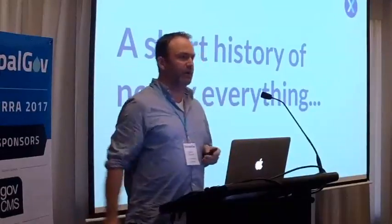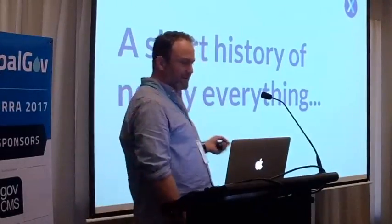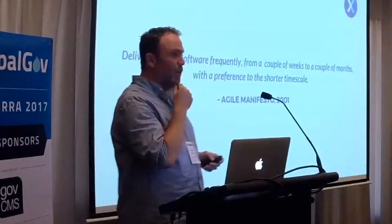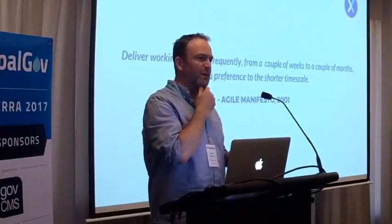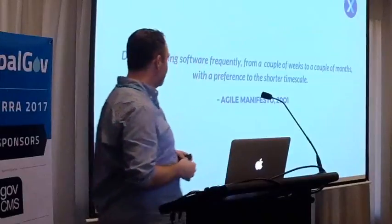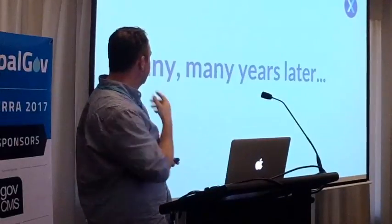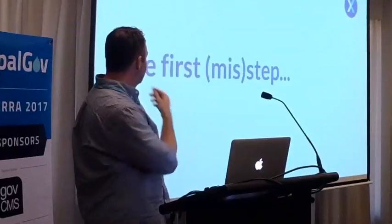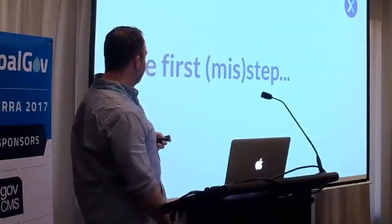I'm going to start with a short history of where we are and what's happened so far. Back in 2001, a few people got together and put something together called the Agile Manifesto, which I'm sure many of you are familiar with. This statement from the principles outlines very nicely what continuous delivery is all about. Many years later, in 2015, we took what would be the first step in implementing Agile in government in Australia.